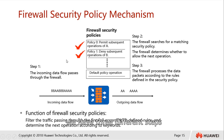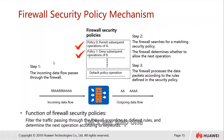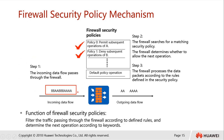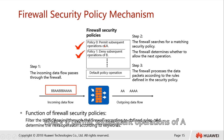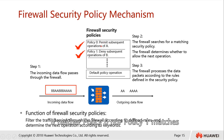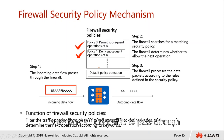We have three different steps. In step one, incoming data flow passes through the firewall. According to the security policy, for example, policy 0 permits subsequent operations of A, and policy 1 denies subsequent operations of B. Based on this policy, we allow A to pass through and we deny B. If neither policy 0 nor policy 1 is matched, we follow the default policy. In a Huawei firewall, the default policy operation is to deny all traffic.